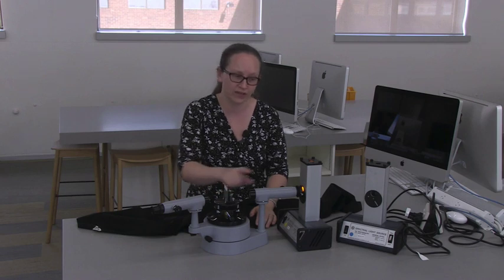This part here is called the collimator. Its job is to make the light rays parallel before they go through the diffraction grating. At the end of the collimator, there's a little slit that you can adjust. Now it's really important that you do this gently, as you don't want to wedge it shut or wedge it open.